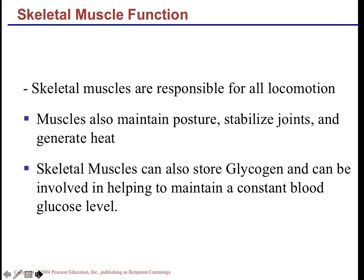This lecture focuses on the skeletal muscle cell itself. A skeletal muscle cell is called a muscle fiber. Skeletal muscles are responsible for locomotion, maintaining posture, stabilizing joints, and generating heat when you shiver. They can also store glycogen — a polymer of glucose — so that if blood glucose levels drop, stored glycogen can be depolymerized into glucose to bring blood sugar back to normal.